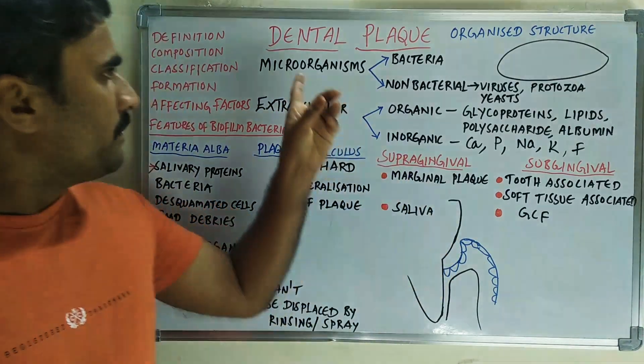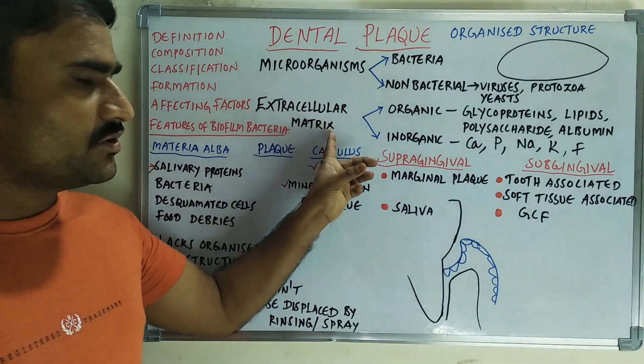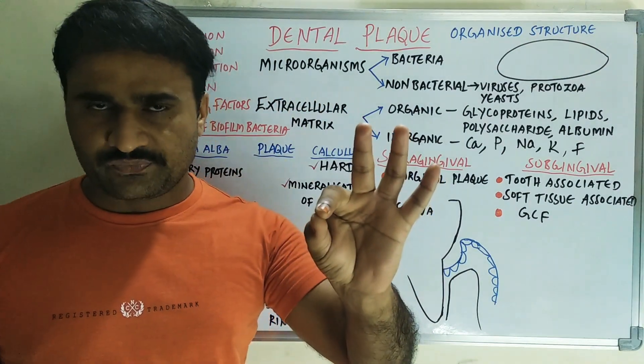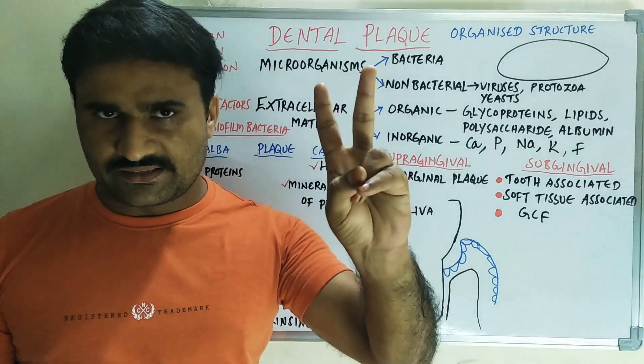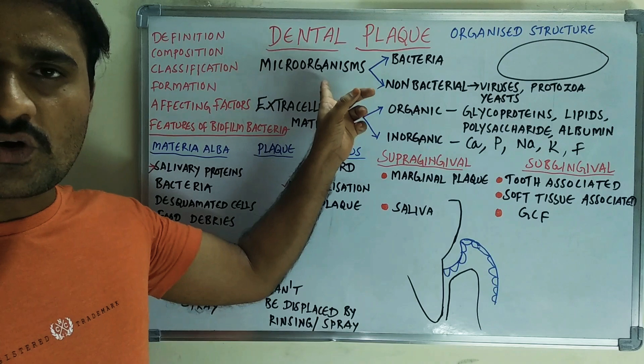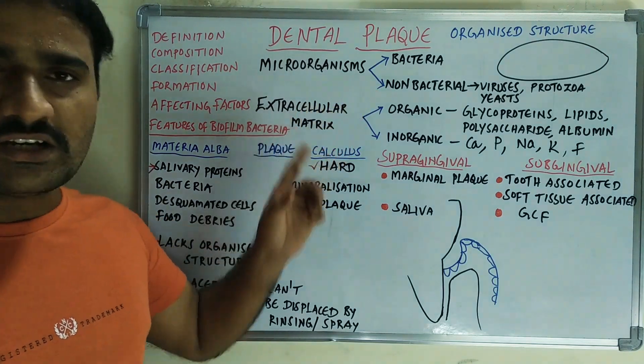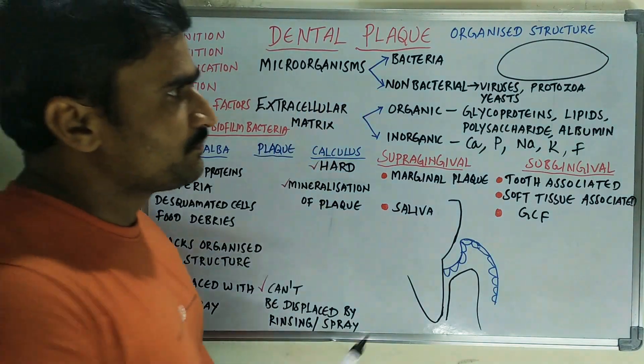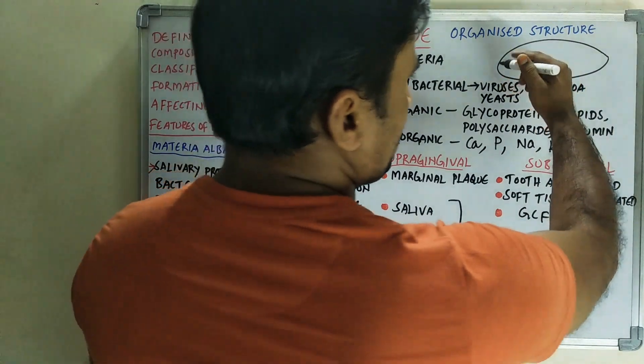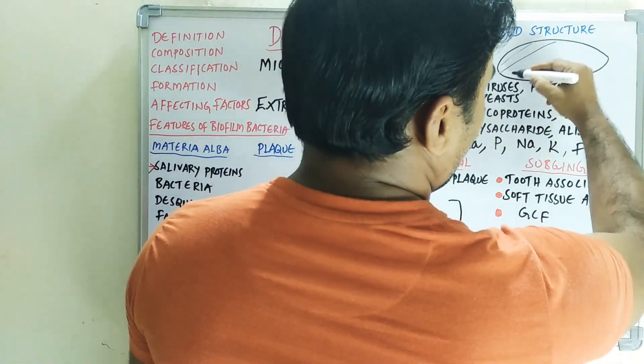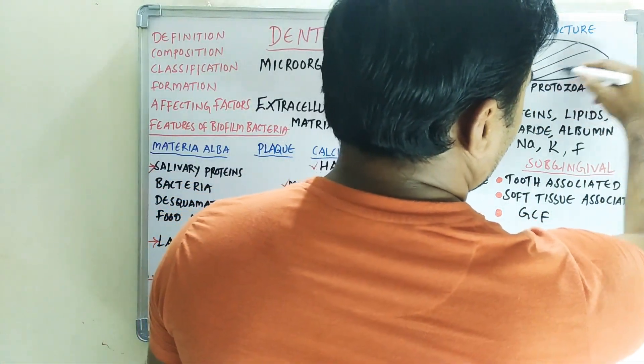Dental plaque mainly contains microorganisms and extracellular matrix. There are only two things: first is microorganisms, second is extracellular matrix. If you see here, this circle is the extracellular matrix.